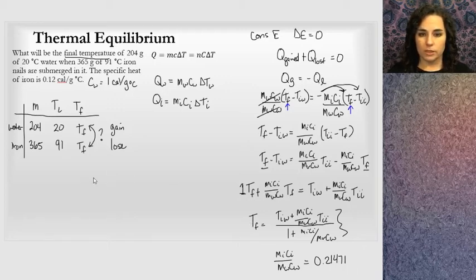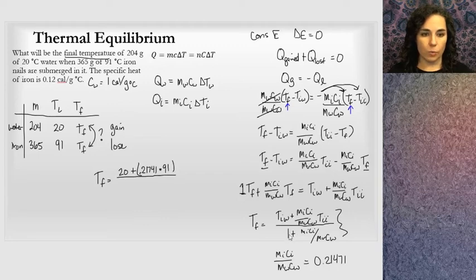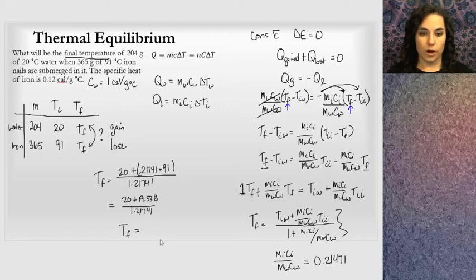Using the ratio 0.21471: T_final = (20 + 0.21471 × 91) / (1 + 0.21471) = (20 + 19.538) / 1.21471 = 39.538 / 1.21471. The final temperature of the iron nails and water mixed together is 32.55 degrees Celsius.